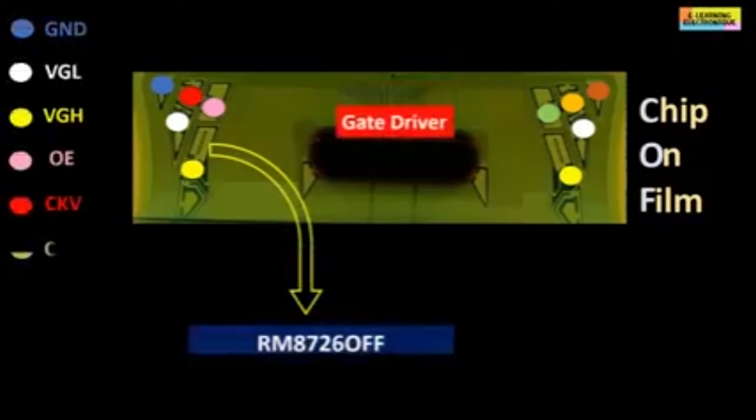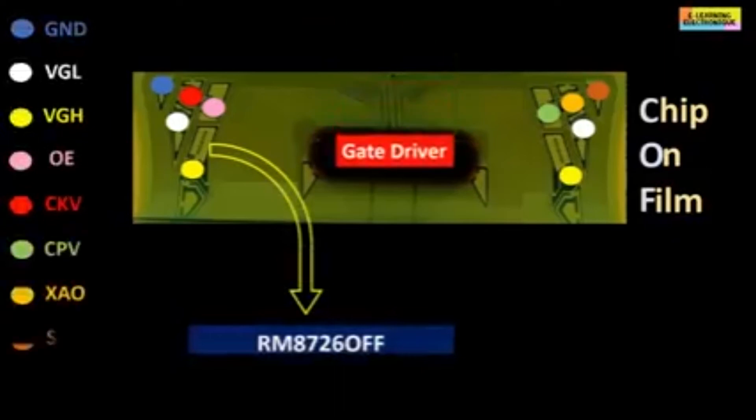To know the name and function of each test point, it is necessary to note the name of the chip registered on the COF and to find its data sheet. Here we are interested in the chip that drives the rows, called the gate driver. The name of each test point is given in abbreviated form, whose meaning will be detailed in this video.